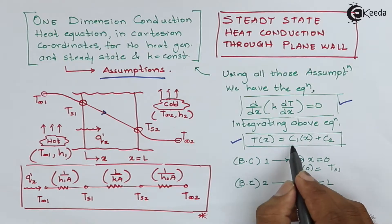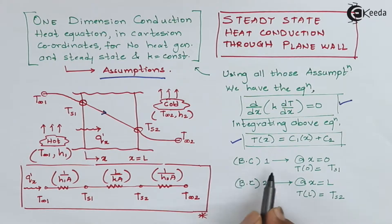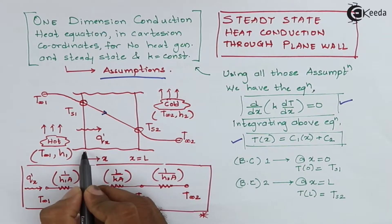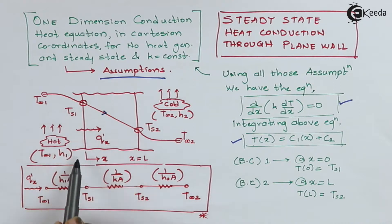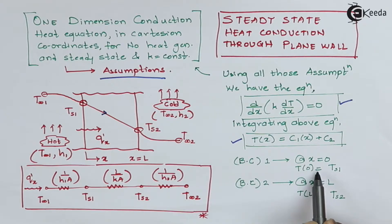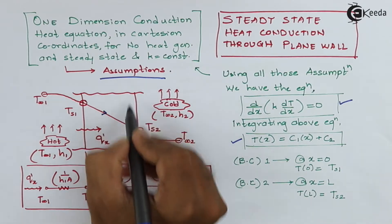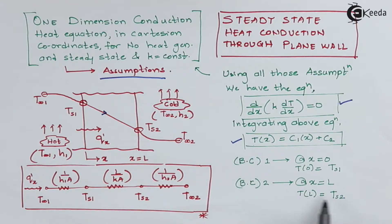Since we have got two constants, we need two boundary conditions. Boundary condition 1 will be at X = 0, that is at the left hand side surface of the wall, the temperature is Ts1. So T(0) = Ts1. Similarly, boundary condition 2 will be at X = L on the right hand side, where the temperature is Ts2. So T(L) = Ts2.